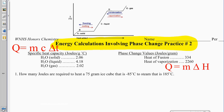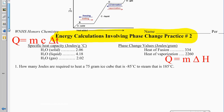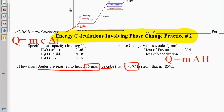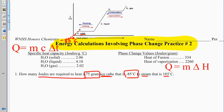The hardest part is figuring out what you are doing for your particular calculation. Problem one says: how many joules are required to heat a 75-gram ice cube at negative 85 degrees Celsius to steam that is 185 degrees Celsius? So we need to travel all the way from negative 85 as a solid up to steam at 185 degrees Celsius.